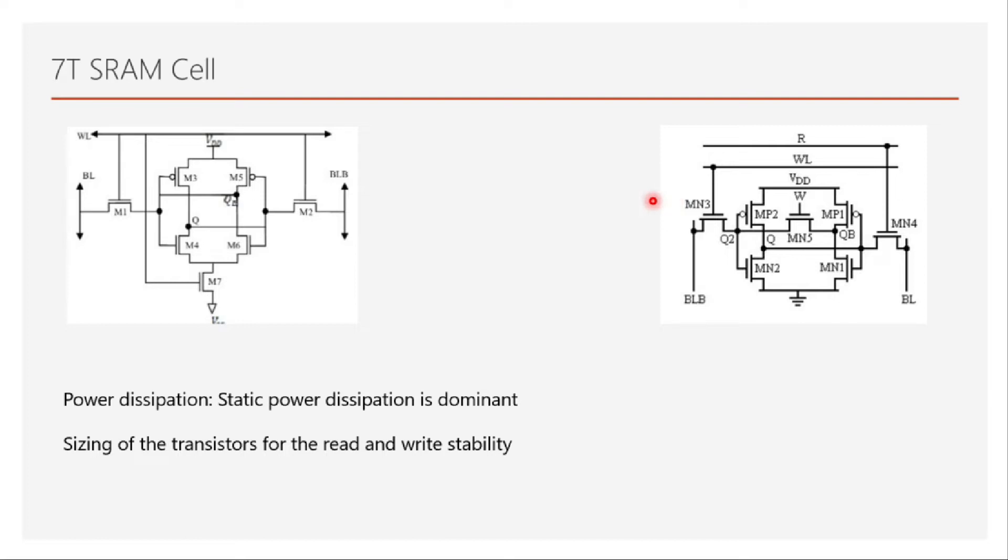So what are its advantages? There are multiple different types of things that people develop by adding one transistor, and they try to... most of these configurations will have two major things as their agenda or their motivation. One is the power dissipation that happens in SRAM cell. In 6T SRAM it is basically because of the static dissipation, because most of the time...